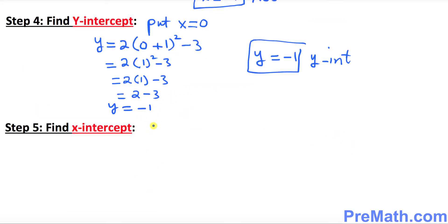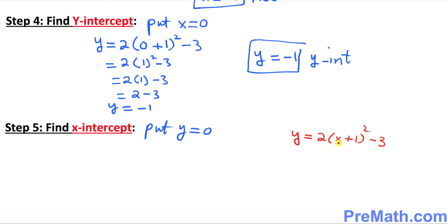In step 5 we are going to find the x-intercept. For x-intercept we must put y equal to 0 in our original equation. Our original equation is y equals 2 times (x plus 1) squared minus 3, so we set 2 times (x plus 1) squared minus 3 equal to 0. Let's go ahead and solve for x.